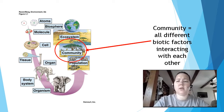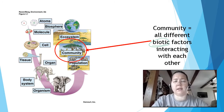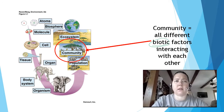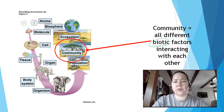When we say community, remember that's all the different biotic factors interacting with each other. So in a community — in this picture we've got elephants, giraffes, the tree, the grass, and so on and so forth. That's what we're talking about when we talk about a community.